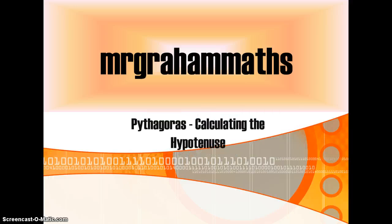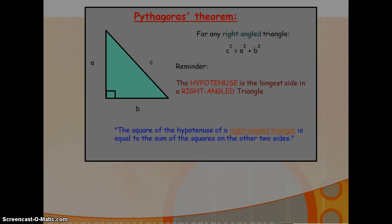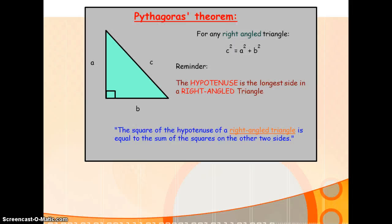In this video we're going to look at Pythagoras Theorem, starting first with calculating the hypotenuse and then using Pythagoras Theorem to find a shorter side. Pythagoras Theorem is a formula that links together all three sides of a right angled triangle. If you have a question that involves all three sides of a right angled triangle where you're given two of the sides and asked to find the length of the third side, then you know that you are facing a Pythagoras question.